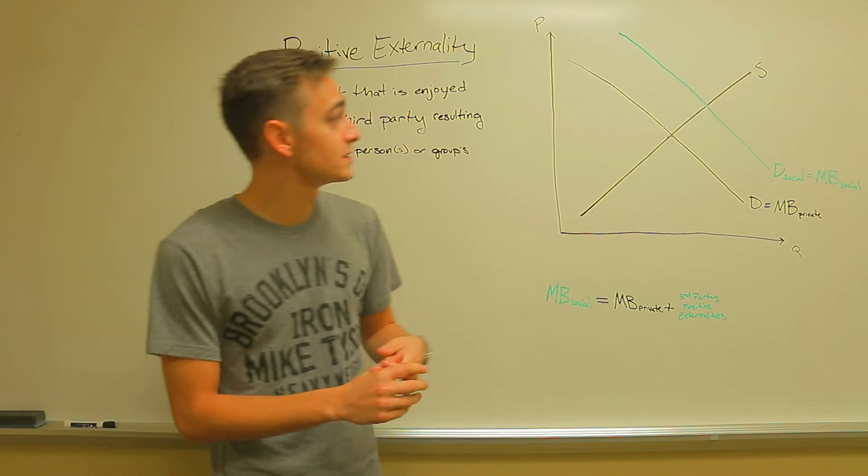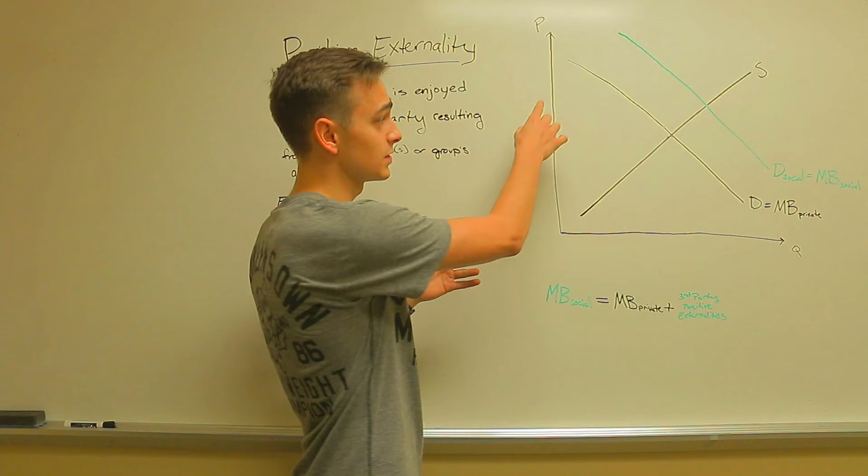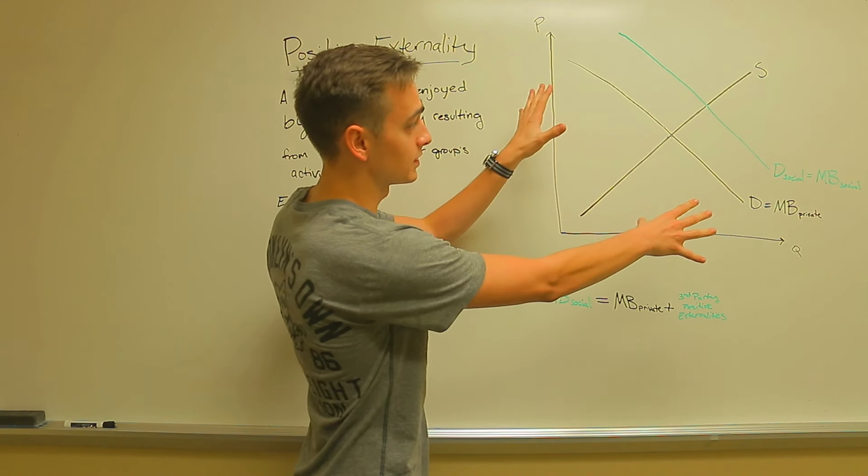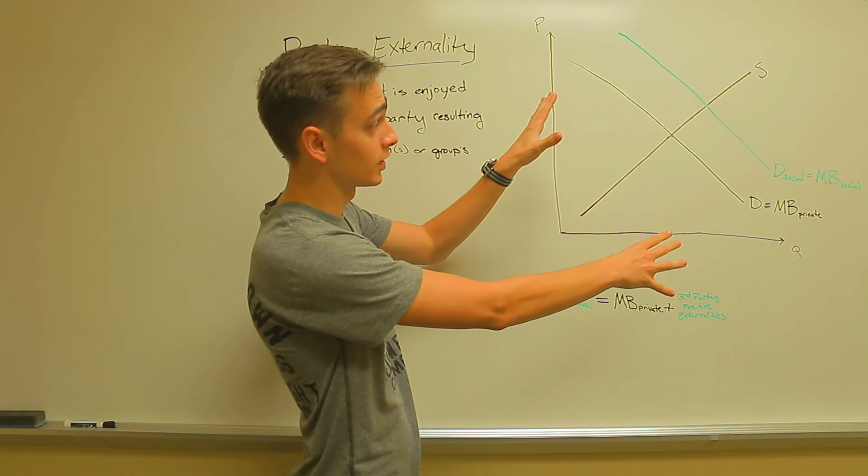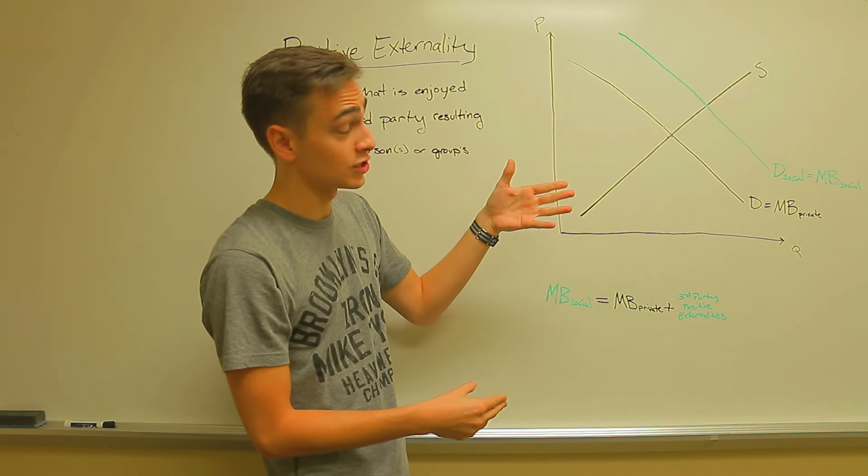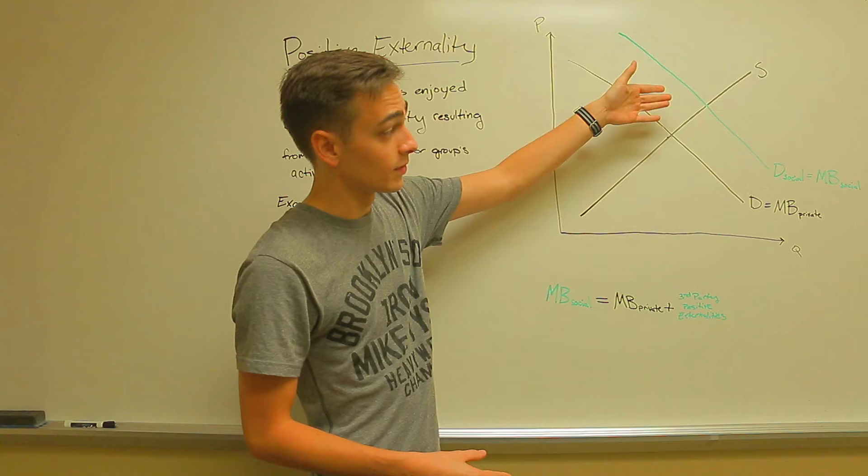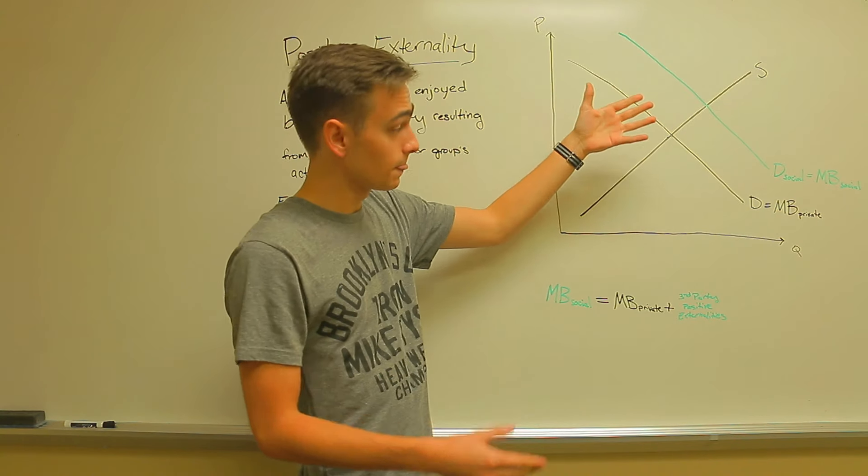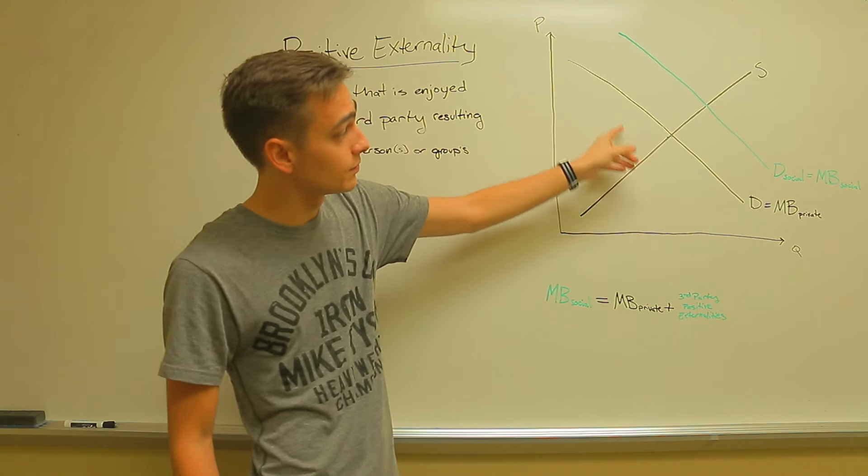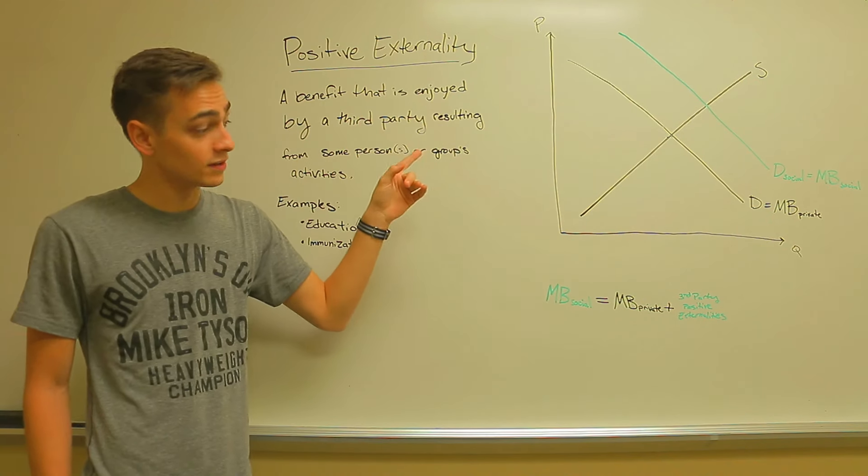So what happens is in the demand curve here. This is the private one. The black is just the actual market curve. But since there are these benefits to third parties that isn't shown by that transaction, there's another curve, which is the marginal benefit to the society, which is shown by the green here. It's the private demand curve plus the third party positive externalities.